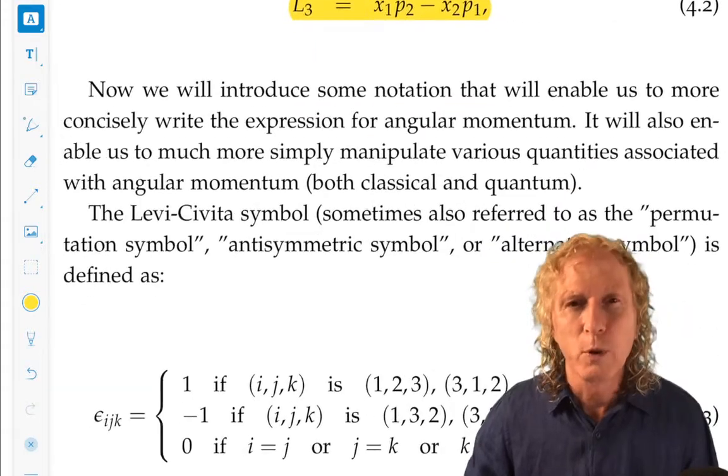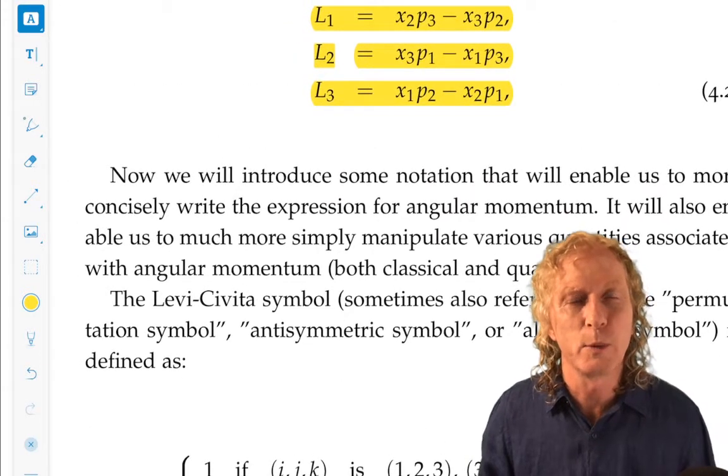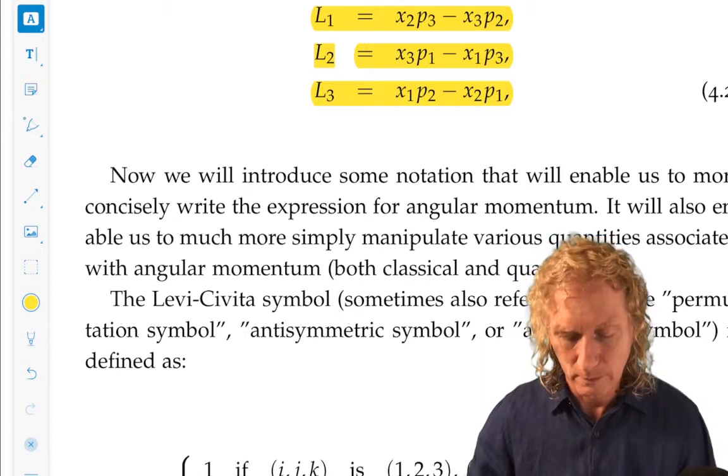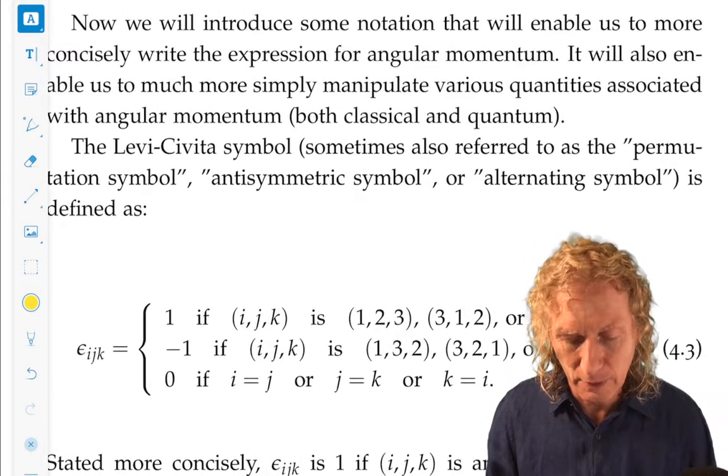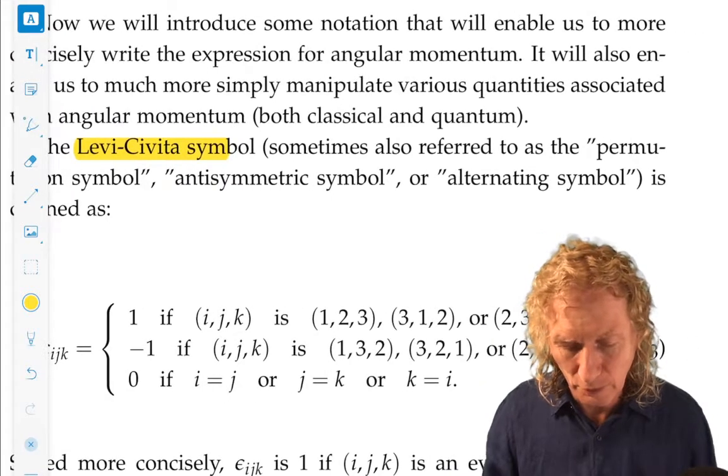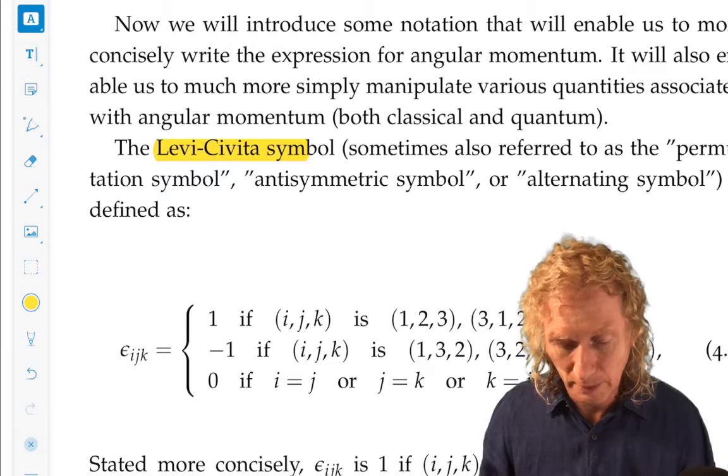So, what we want to do is introduce a notation that helps us in the bookkeeping and actually helps us with the calculations that we're going to need to do. So, this is the Levi-Civita symbol. Sometimes it's called the permutation symbol, or the anti-symmetric symbol, or alternating symbol.